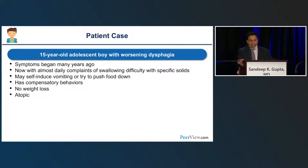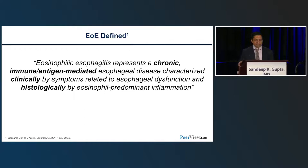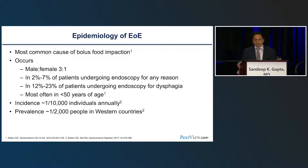Once you have this history, you start making your differential diagnosis, and with this history, eosinophilic esophagitis will be on the list. It is a chronic immune or antigen-mediated process, clinically defined by symptoms of esophageal dysfunction and histologically by eosinophil-predominant esophageal inflammation. It is the most common cause of food impaction, more common in males than females at a three-to-one ratio — a predominance that has remained since the 1990s when we first started learning about this disease.